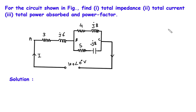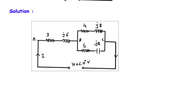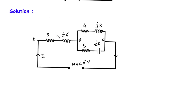Solution. First of all we will redraw the circuit. Let's say this is Z1, this is Z2, and this is Z3. This is impedance Z1, this branch impedance is Z2, and this branch impedance is Z3.